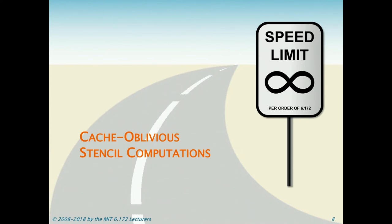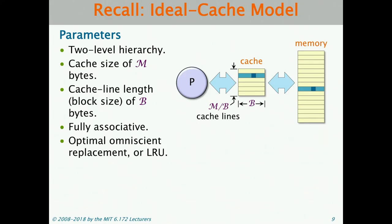That code wasn't very cache efficient. You could make it cache efficient using tiling, but we'll go straight to the cache-oblivious algorithm since it's much cleaner. Let's recall the ideal cache model: a two-level hierarchy with a cache of size M bytes and cache line of B bytes, holding M/B cache lines. Accessing something in cache incurs no miss; loading from main memory costs one cache miss. The model assumes a fully associative cache with either an optimal omniscient replacement policy or LRU.